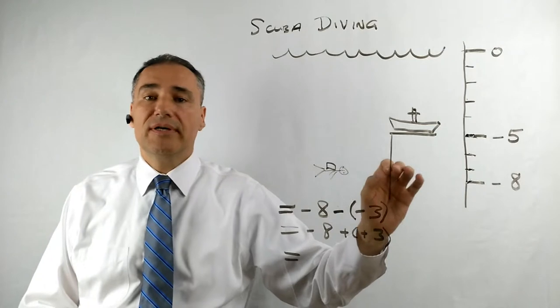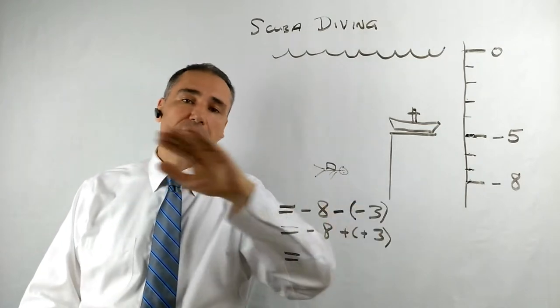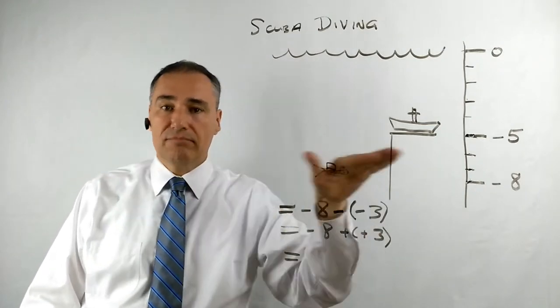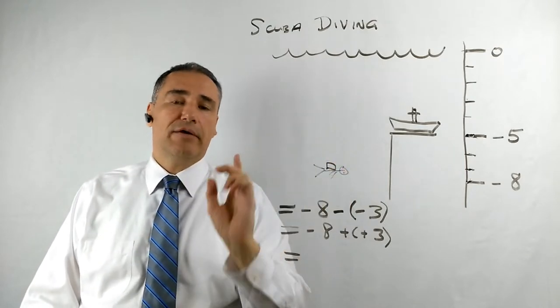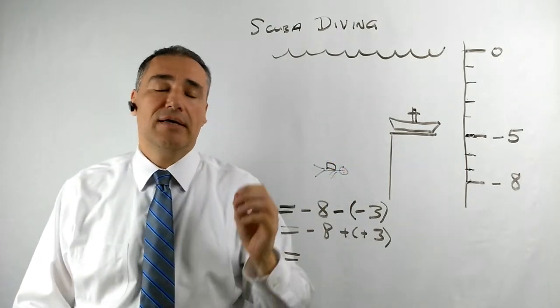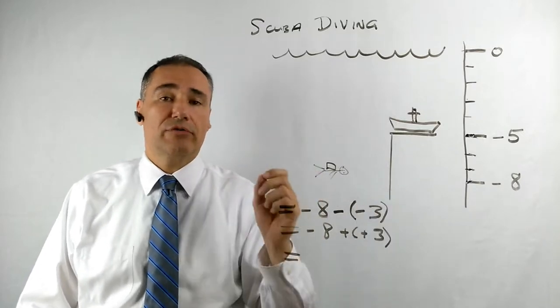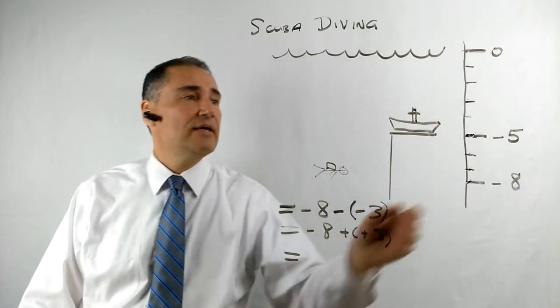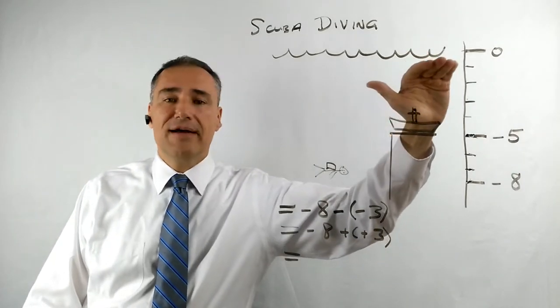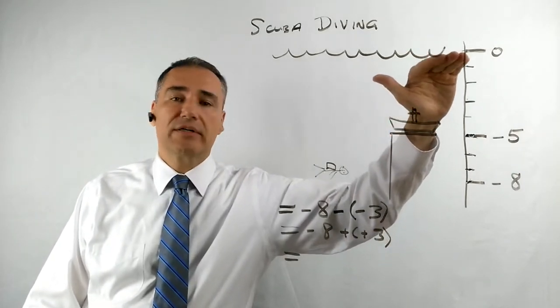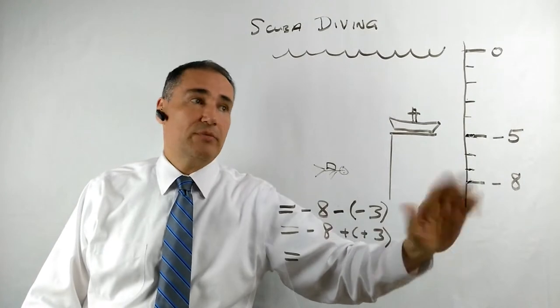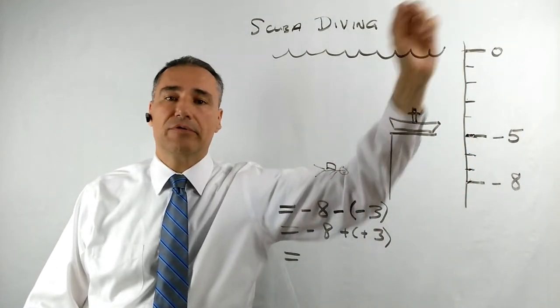Now usually, in most of my other videos, you see number lines going on the horizon or just flat like this. And you remember, the trick is that if you're going to add a number, you go to the right. If you're going to subtract a number, you go to the left. So with scuba diving, this example, when you're going down, you subtract numbers. When you go up, you add numbers. A little bit different.